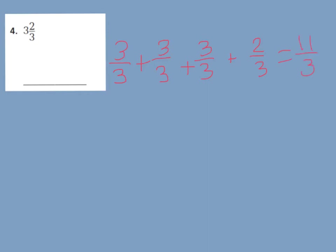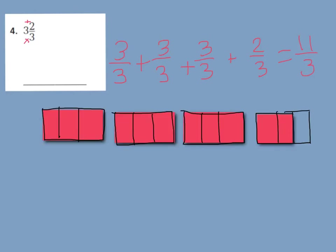Let's check it: 3 times 3 is 9, plus 2 more is 11. Here's our model of why it would be 11 thirds. We have 3 thirds which is one whole, 3 thirds which is another whole, 3 thirds which is the third whole — that equals 9 thirds — plus 10, 11 thirds. That's how we get our answer.